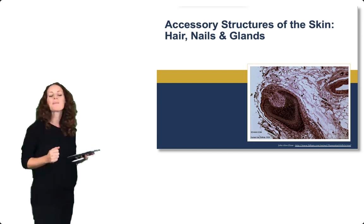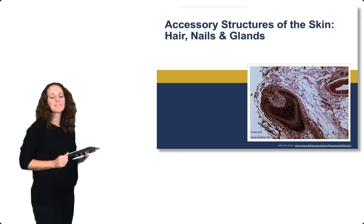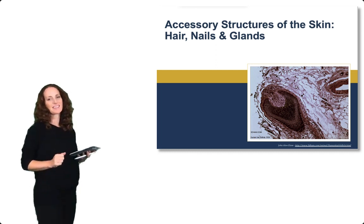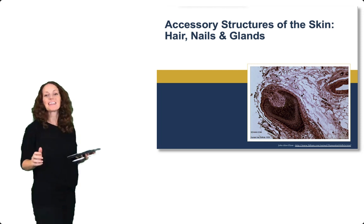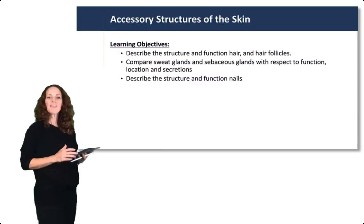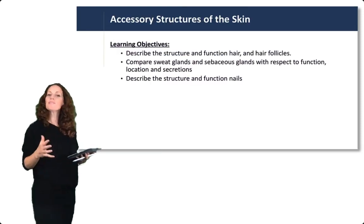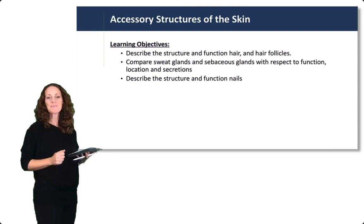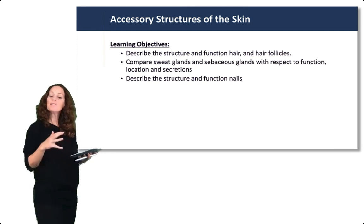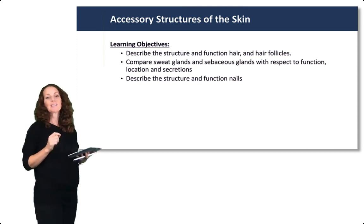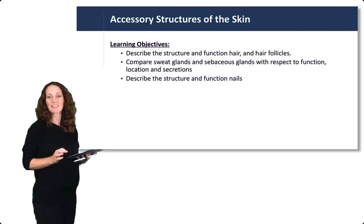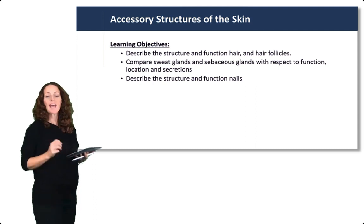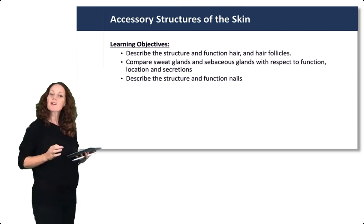In this lecture we'll talk about the accessory structures of the skin: hair, nails, and glands. We'll describe the structure and function of hair and hair follicles, compare the two major types of glands — sweat glands and sebaceous glands within the skin — and describe the structure and function of the nails.